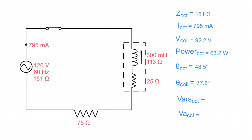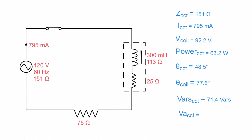Next up is the reactive power, measured in VAR. We only have 113 ohms of reactance in this entire circuit from that one coil. Using the formula I²XL: 0.795 squared times 113 ohms gives 71.4 VAR. That is my total reactive power for the circuit, which exists only across the inductive component.